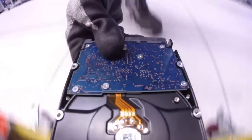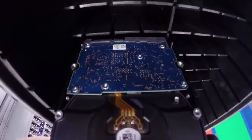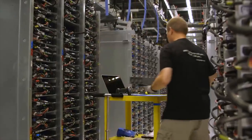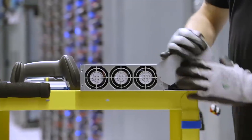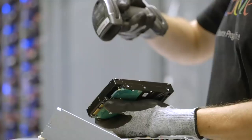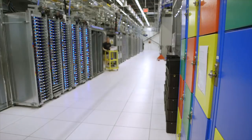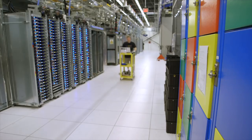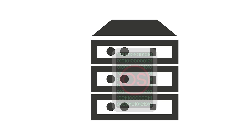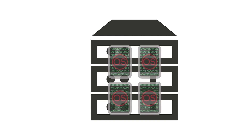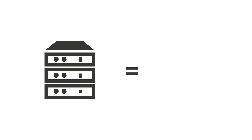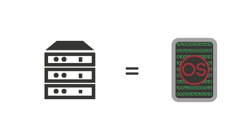Cloud computing is possible because of a technology called virtualization. Virtualization allows for the creation of a simulated, digital-only virtual computer that behaves as if it were a physical computer with its own hardware. The technical term for such a computer is a virtual machine. When properly implemented, virtual machines on the same host machine are sandboxed from one another, so they do not interact with each other at all, and the files and applications from one virtual machine are not visible to the other virtual machines even though they are on the same physical machine.